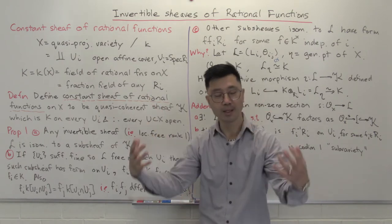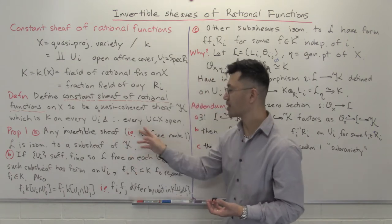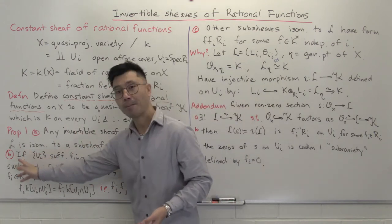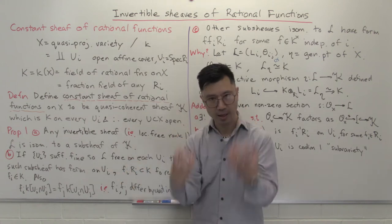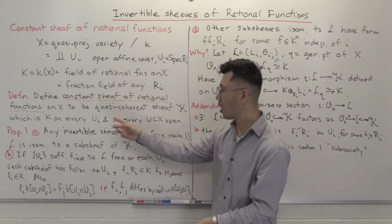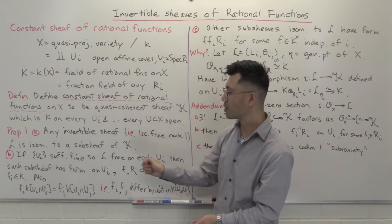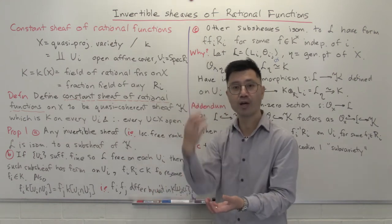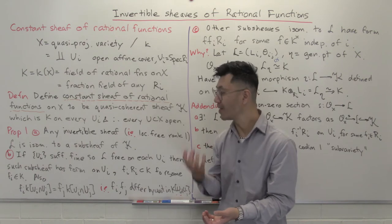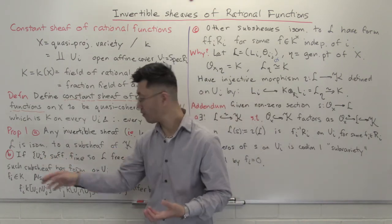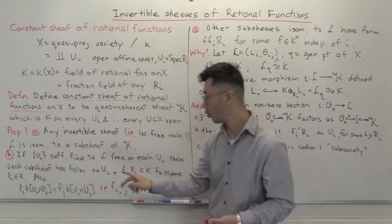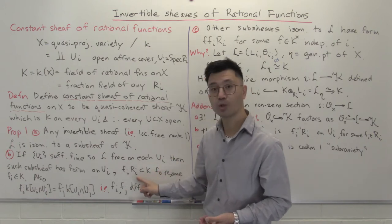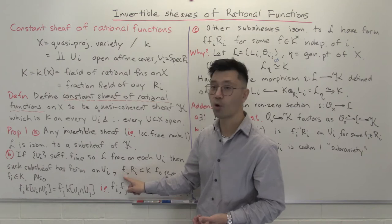Once you are given part A, part B follows fairly nicely and gives us a way to really think about what a line bundle is. Being an invertible sheaf, it's locally free of rank one, so it's actually free of rank one on a sufficiently fine open affine cover. Suppose U_i is sufficiently fine so that L is actually free of rank one on all those U_i's — free of rank one means on U_i it's some R_i module which is free, generated by a single element we can call f_i.